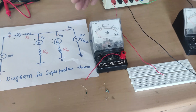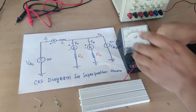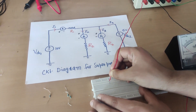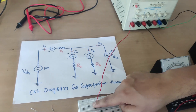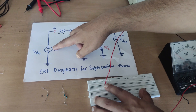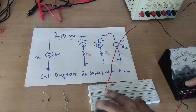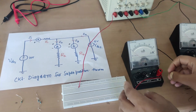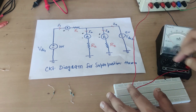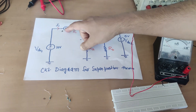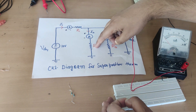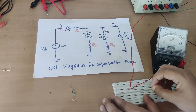Let us now design this circuit on the breadboard. First, I bring the 10-volt DC source and connect its positive terminal on the breadboard. Then I connect a wire between the ammeter positive and the voltage source positive. Next, the ammeter negative is connected with resistor R1. I have a 1 kΩ resistor, a 780 Ω resistor, and another 780 Ω resistor. I connect the 1 kΩ resistor on the breadboard.